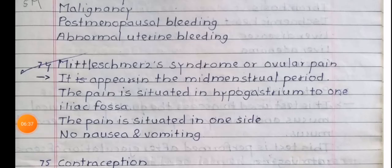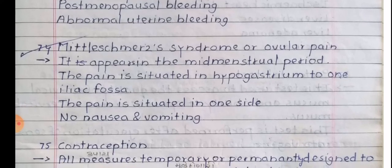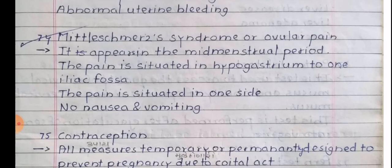Mittelschmerz syndrome or ovulation pain. It appears in the mid-menstrual period. The pain is situated on one side. No nausea and vomiting is seen.